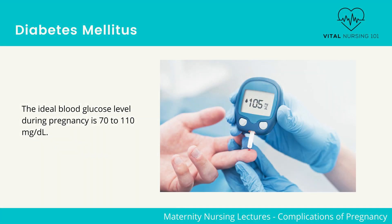The ideal blood glucose level during pregnancy is 70 to 110. Note that clients develop diabetes mellitus during pregnancy usually in the second or third trimester.